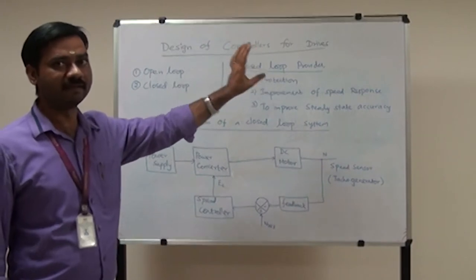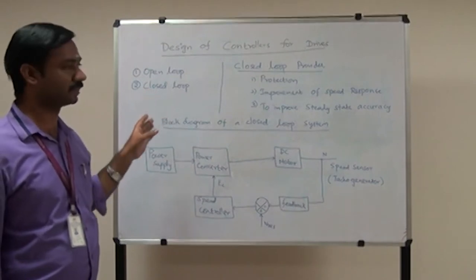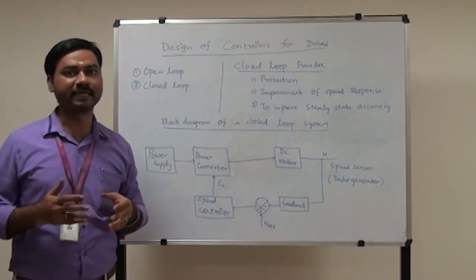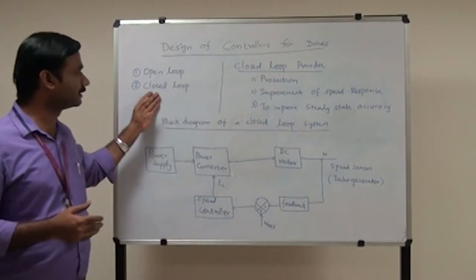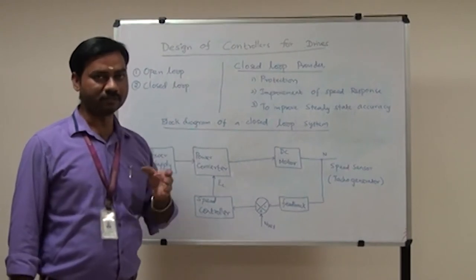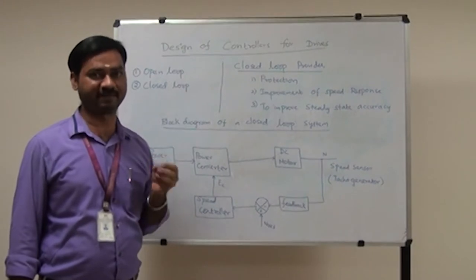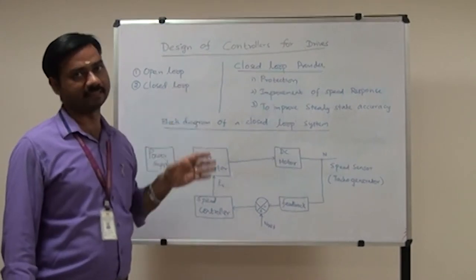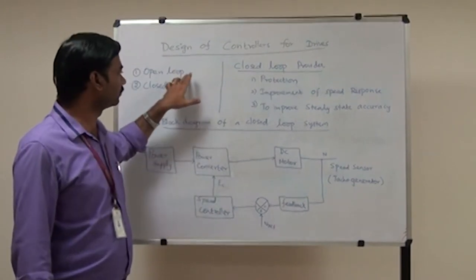To control the drives, we have to design a controller — that is what we are discussing in this topic: Design of Controllers for Drives. In this topic, there are two types of controllers. The first one is the open loop controller, and the second is the closed loop controller. A well-known example for the open loop controller is a fan, and a well-known example for the closed loop controller is an AC system.